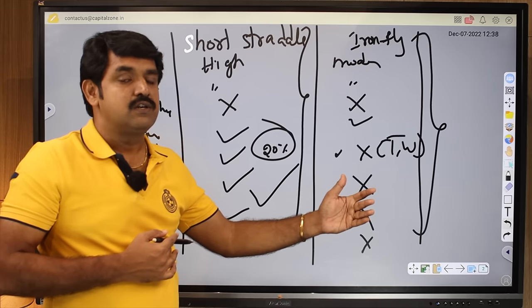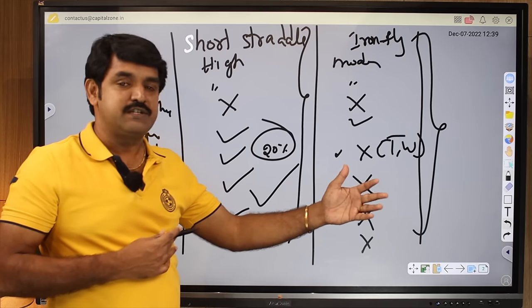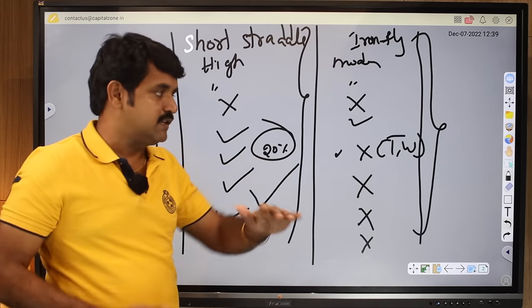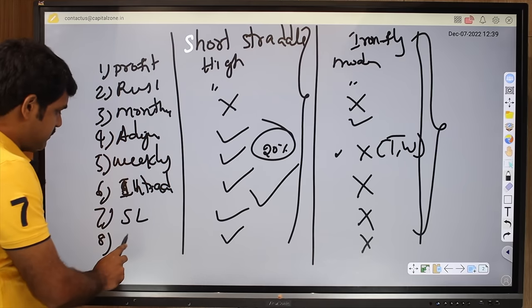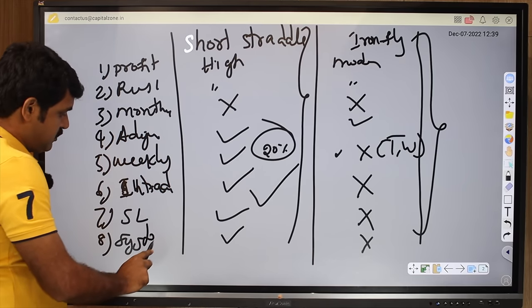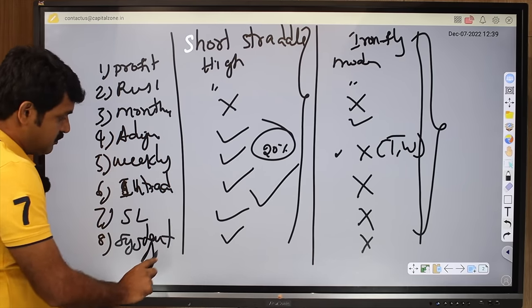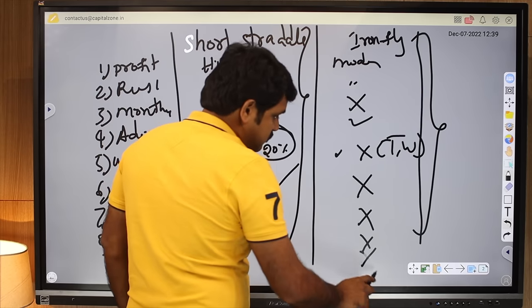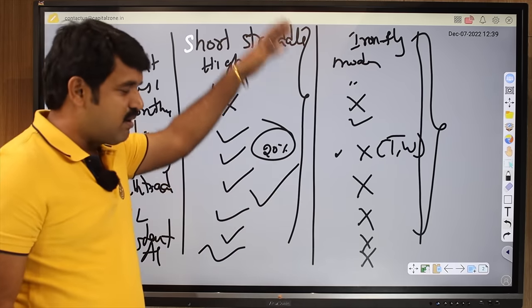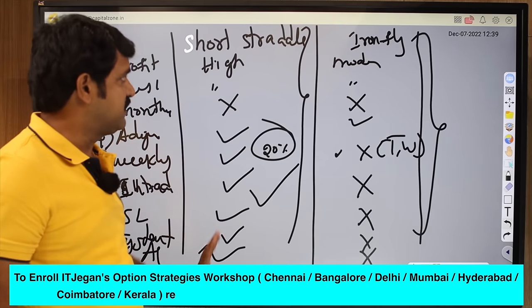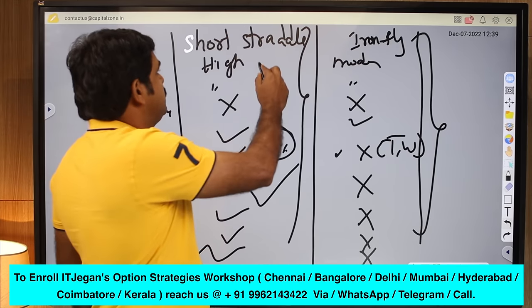This is what I teach in a workshop happening in Madurai and Chennai in Tamil, and all other places in English. You will come to know how to do system trading. For system trading or algo, this is fantastic. This will not suit because it doesn't give much profit. The R:R is very poor. The R:R is better in short straddle, so I would like to go with the short straddle.